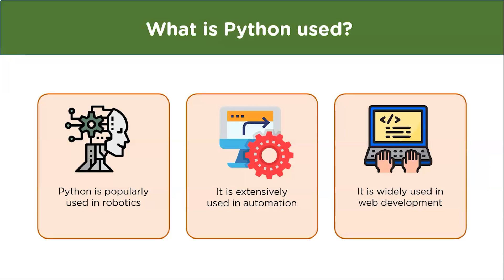Now let's understand what Python is used for. Python is popularly used in robotics and is one of the languages commonly used in Robotic Process Automation (RPA). In the field of automation, Python is extensively used because it helps in making automation systems fast and efficient. Python is also used in web development because it has many frameworks that reduce development effort, and its easy syntax makes debugging straightforward.